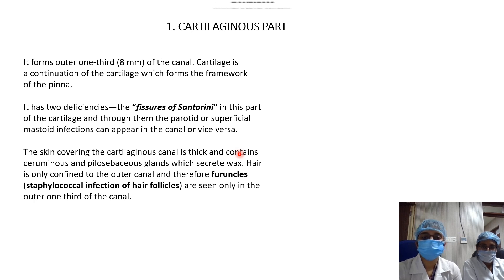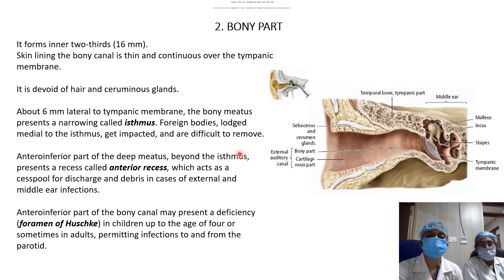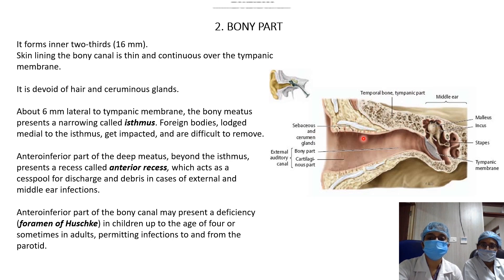Furuncles are only seen in the outer one-third of the canal, as these glands and hair follicles are not present in the inner bony part. The bony part of the canal is formed by the tympanic part of the temporal bone and forms the inner two-thirds, or approximately 16 mm. The skin lining the bony canal is very thin and continuous with the skin of the tympanic membrane; it is devoid of ceruminous glands or hair follicles.